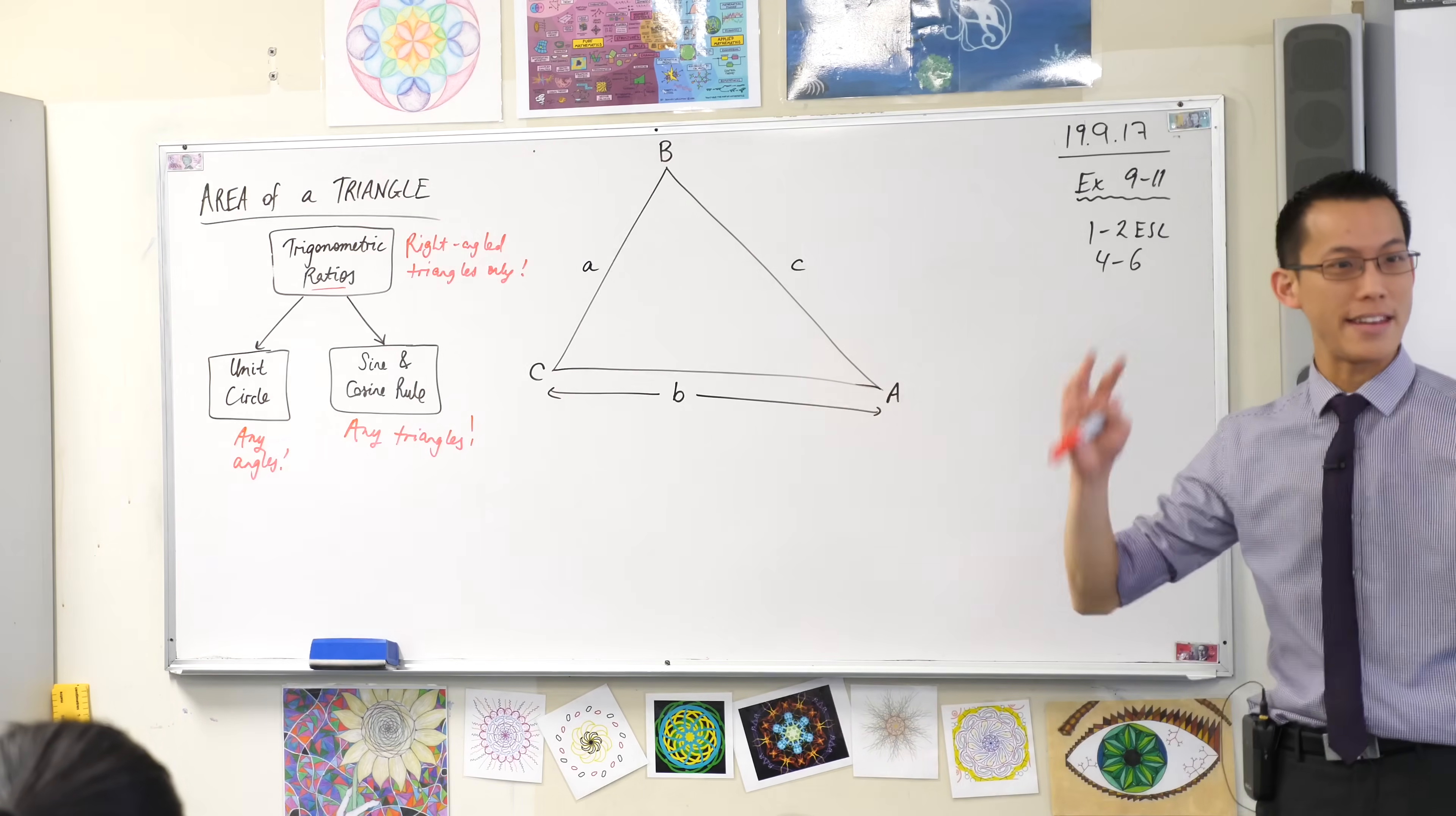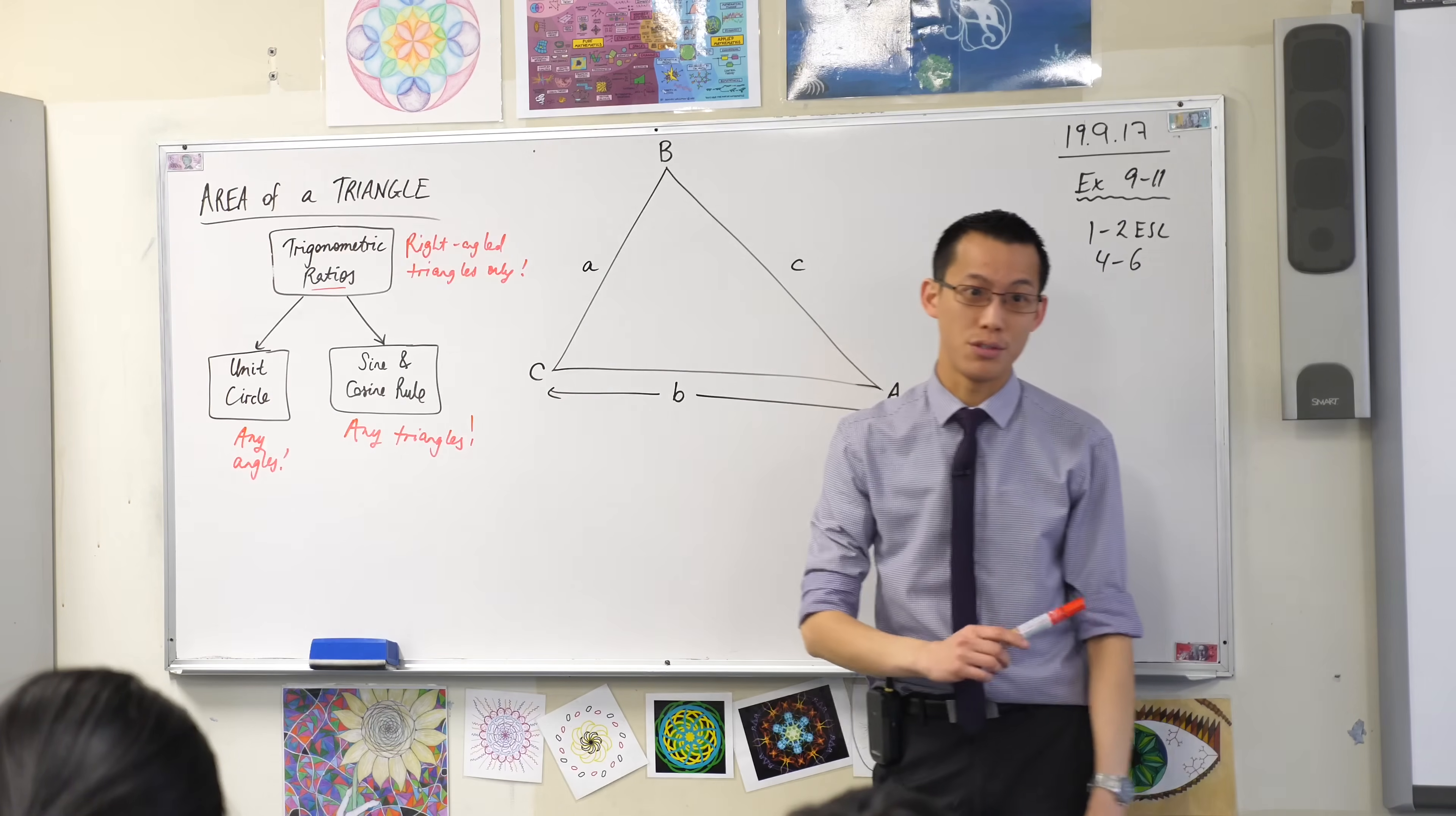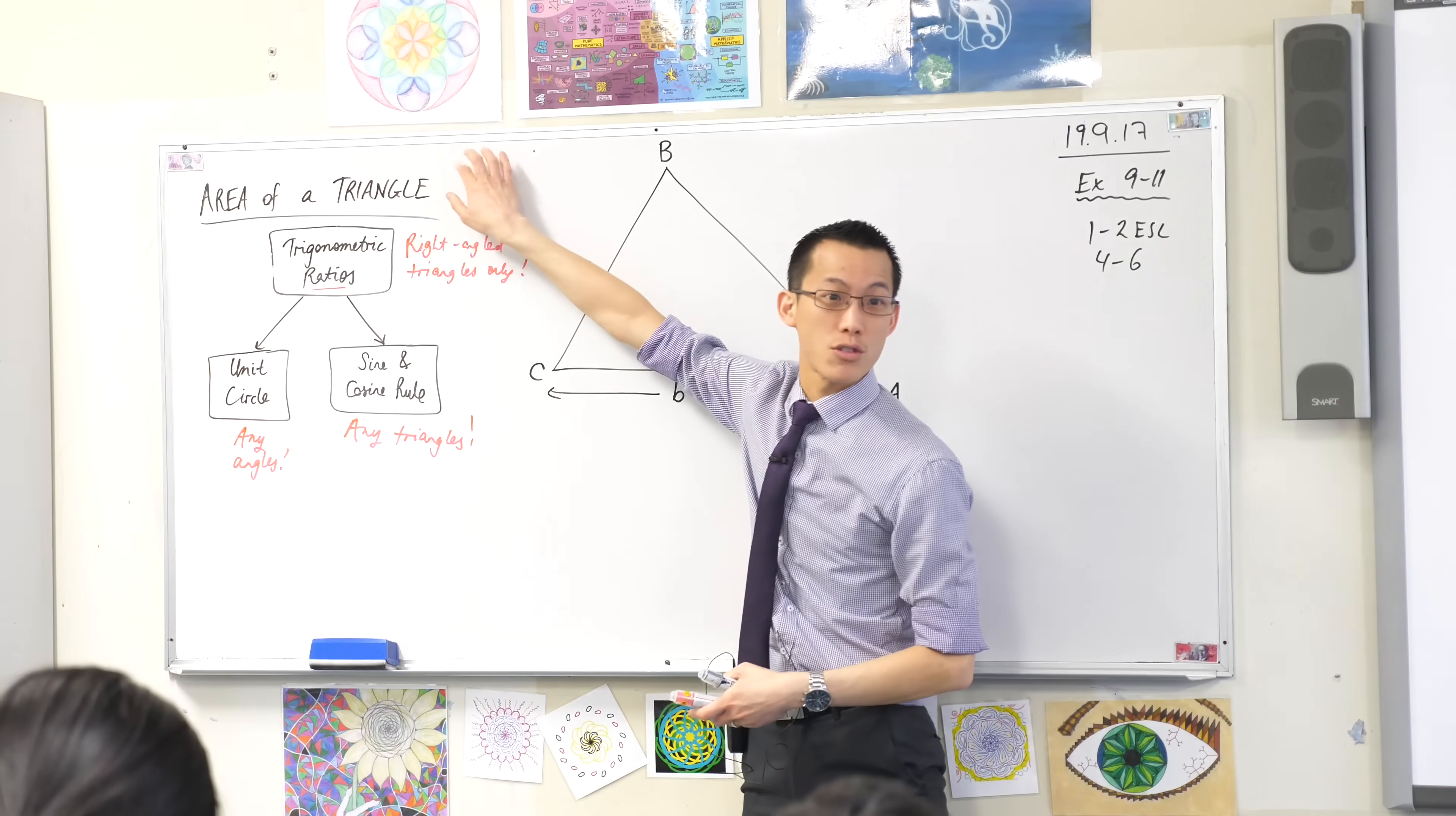The sine rule and the cosine rule can find out any side, any angle that you need. So now our world of trigonometry is a bit broader. You can put any angle you want in there. You can put any triangle you want. And it's this last point under here, any triangle, that we're going to introduce this area of a triangle thing.